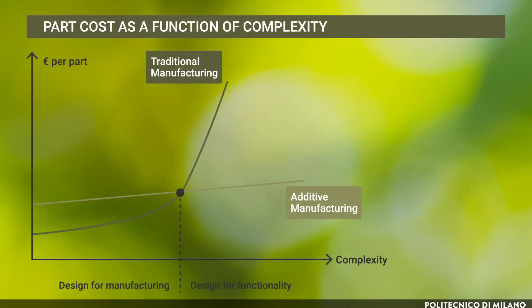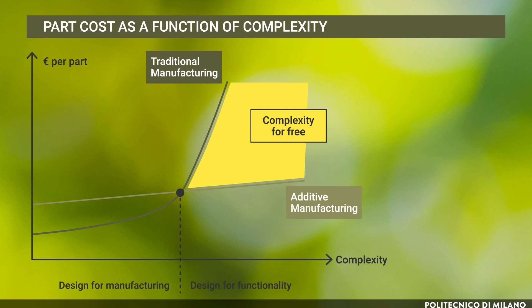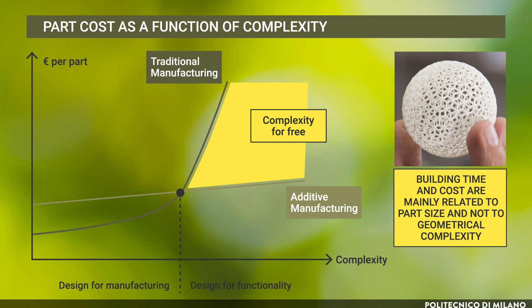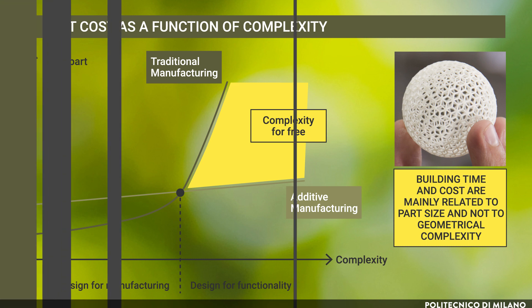Its advantages derive from the possibility to print ideally any shape with a unique machine and without the use of specific tooling and fixtures. Therefore, designers and engineers are empowered with much more design freedom than with traditional manufacturing techniques. Building time and costs are mainly related to part size and not to geometrical complexity. Nevertheless, material and machine costs are still high, so 3D printing is not always economically convenient when compared to traditional manufacturing.